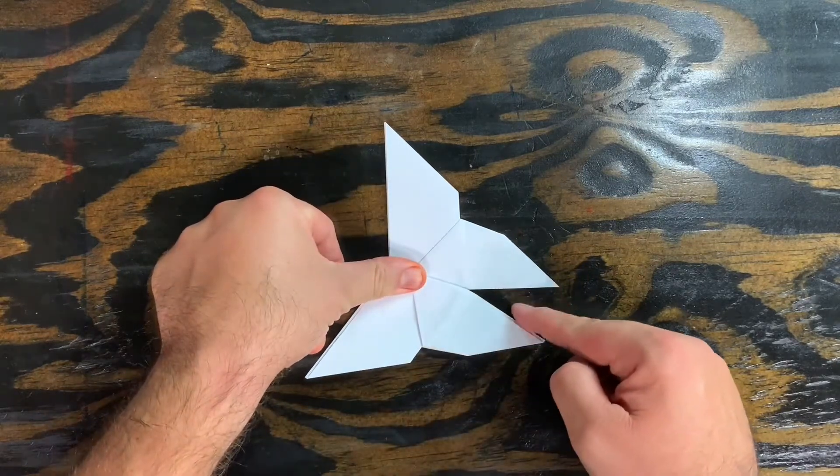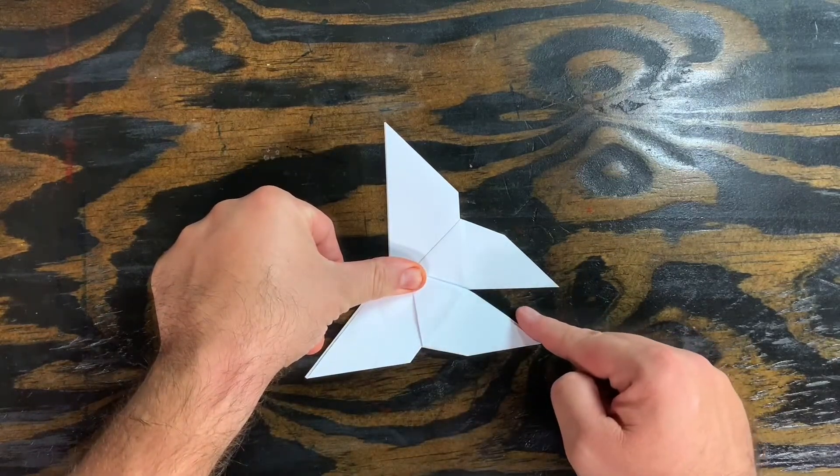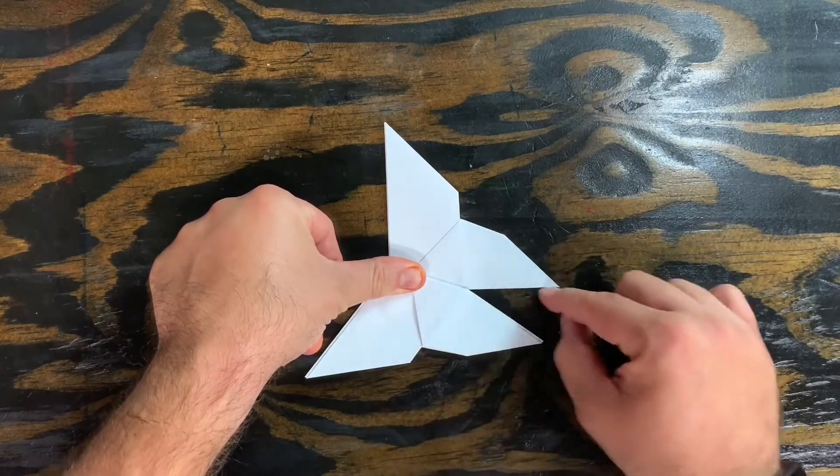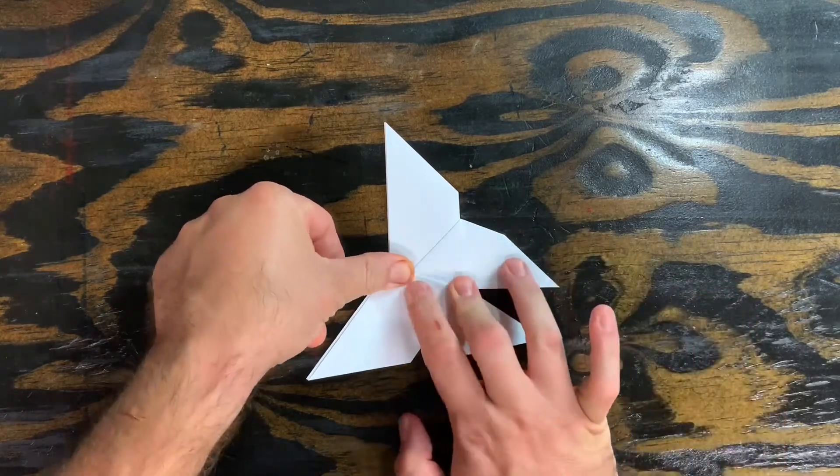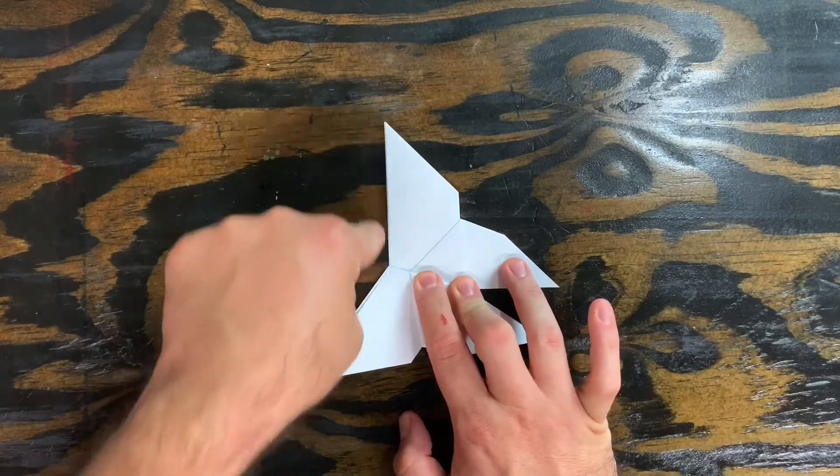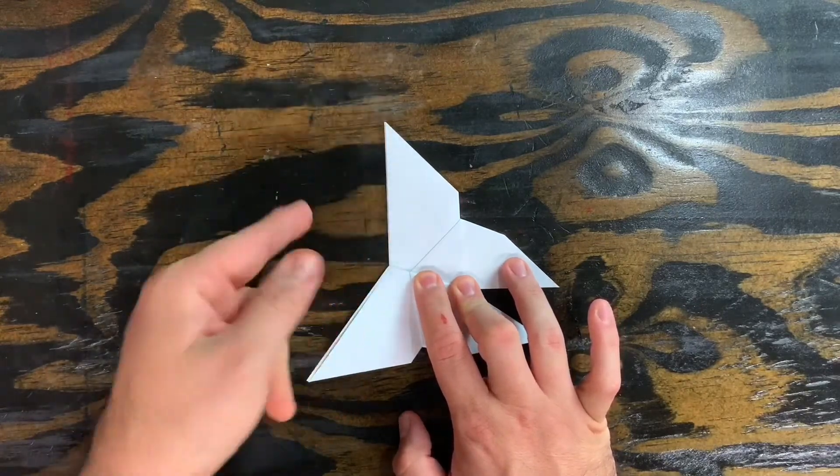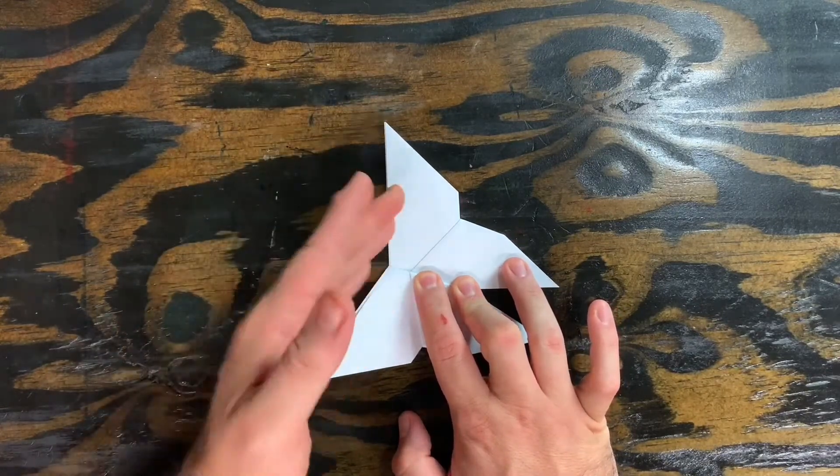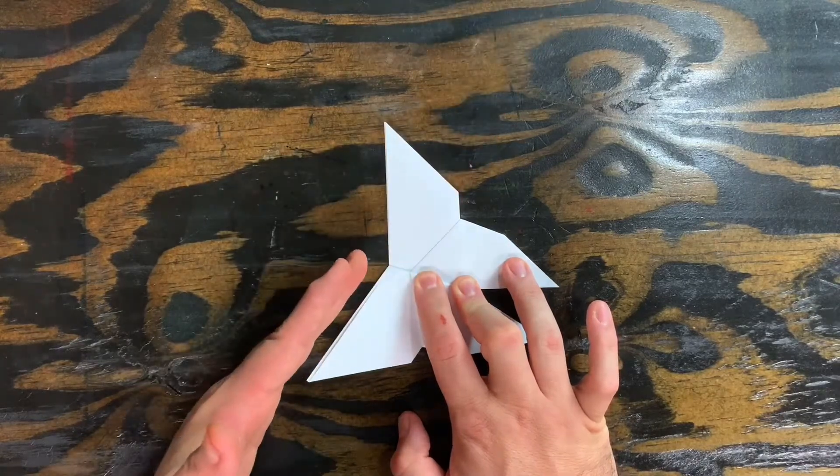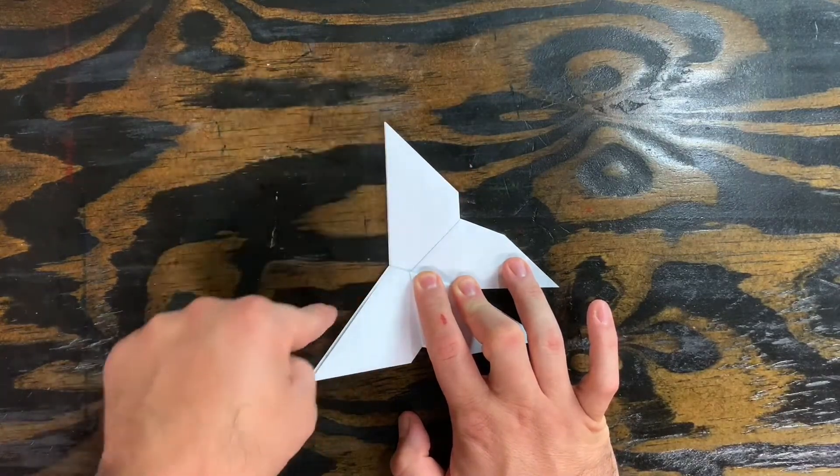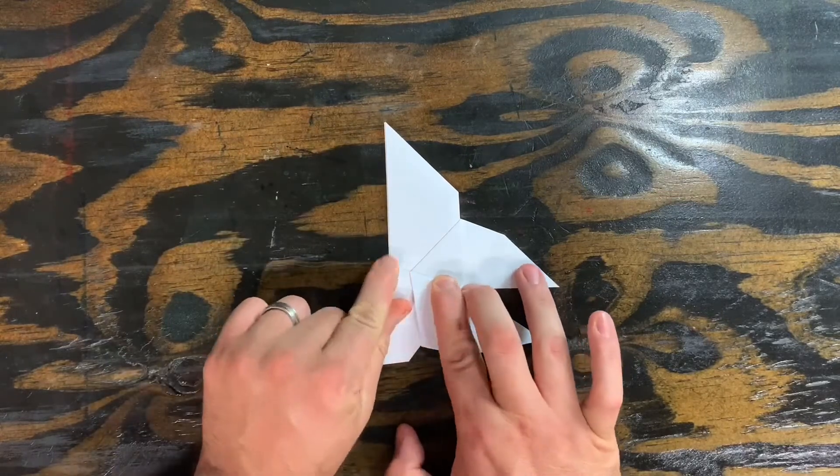That does a couple things. One, it creates a space between these two wings. That looks a lot nicer than having them right against each other. It also creates an angle right here. Which looks more like a real butterfly's wings. We don't want it to be flat across the top. This looks a lot better with this angle. So I crease right there.